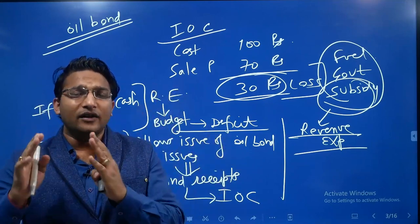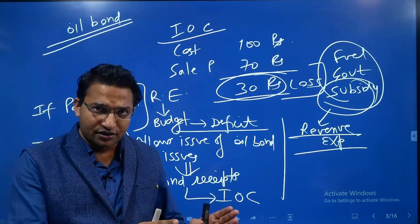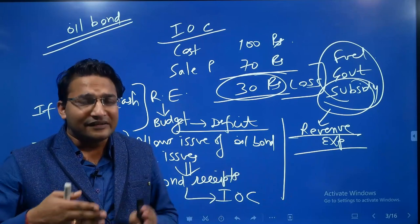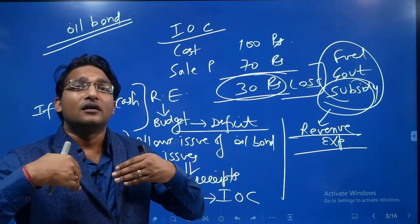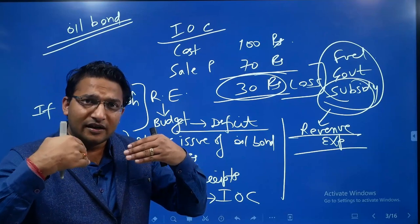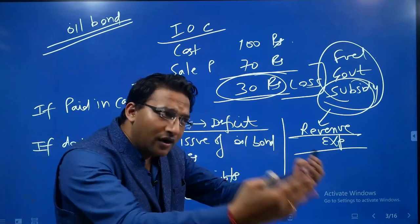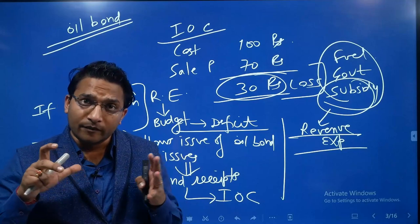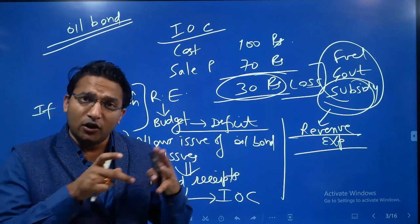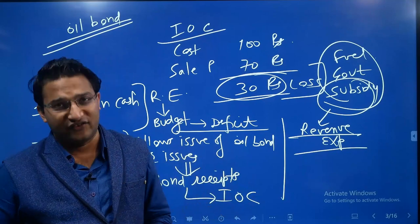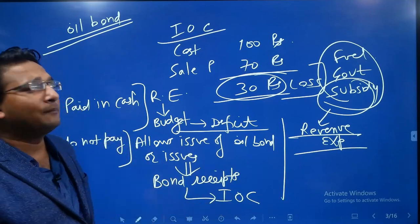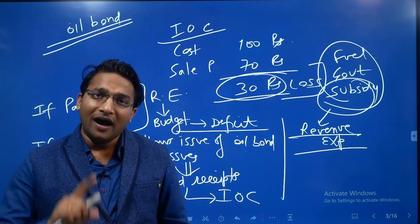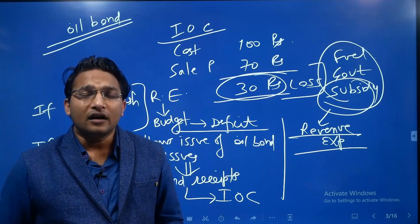This situation happened during the UPA government when oil prices were rising very high and oil bonds were issued. In recent years, around 2017–18/19, the present government repaid the bondholders' amounts that were issued during the UPA time. So at the UPA time it was an off-budget liability, and when repaid, it became part of the deficit.